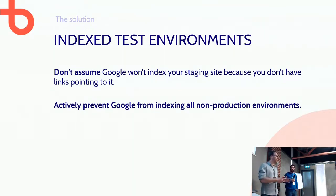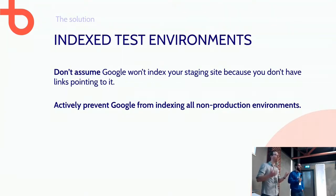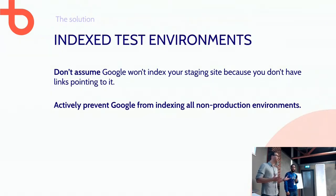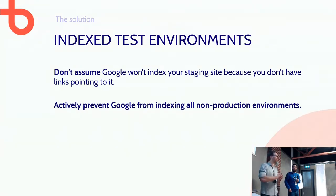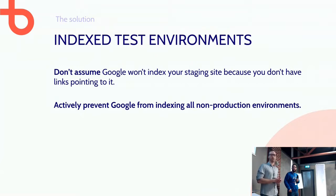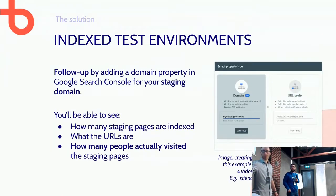We really want to emphasize: never assume Google won't index your staging environment just because you don't link to it. Actively make sure Google cannot index those environments, because we always notice they get indexed somehow if you're not blocking them off. The .htaccess approach is a bit more work, but it's really important — we've seen far too many problems without it.